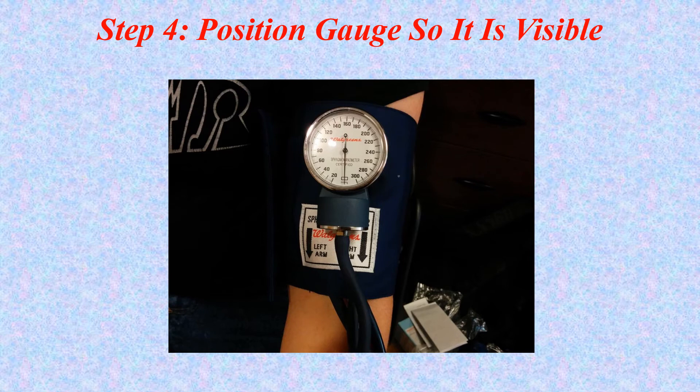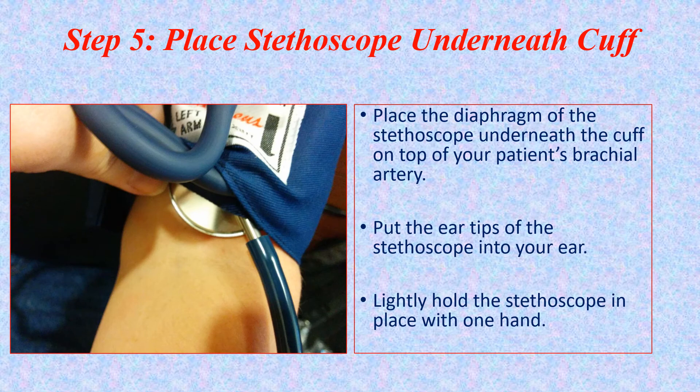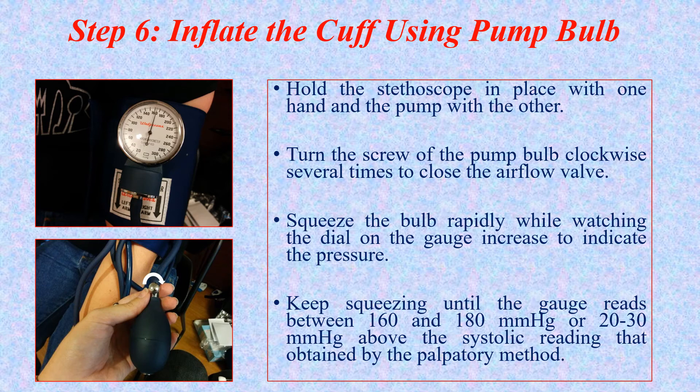The gauge device — the aneroid — must be visible in front of you. Do not place it to the side or behind the patient's arm where you cannot see it, as it gives you the reading on a scale from 0 to 20, 40, 60, 80. Step five shows how to place the diaphragm of the stethoscope on the brachial artery. Step six is how to inflate the cuff using the pump bulb by turning the screw of the bulb to allow inflation of the sphygmomanometer cuff.